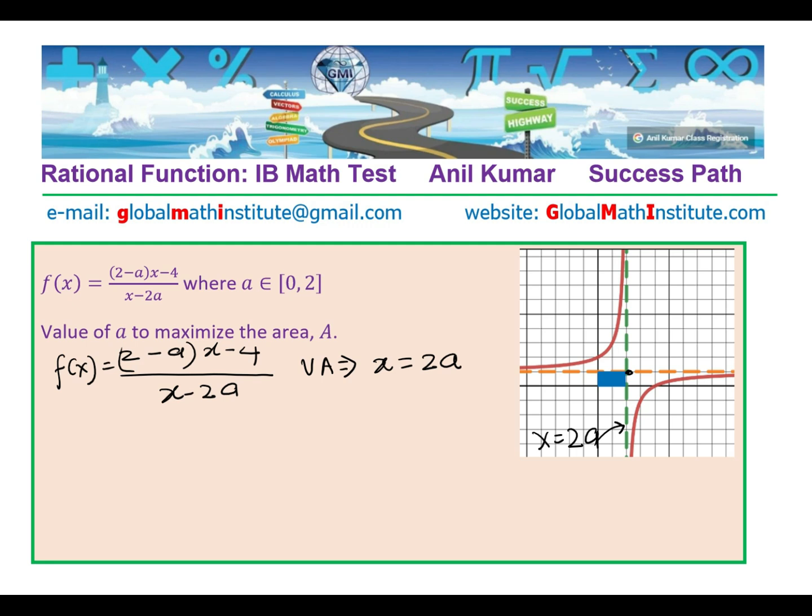So let us analyze. So vertical is at x = 2a, and where will the horizontal be? The horizontal asymptote will be at, let us rewrite, it is the leading coefficients 2-a over 1, right? So horizontal asymptote is y = 2-a. So the horizontal asymptote is 2-a, perfect.